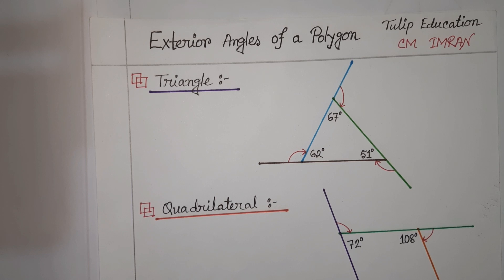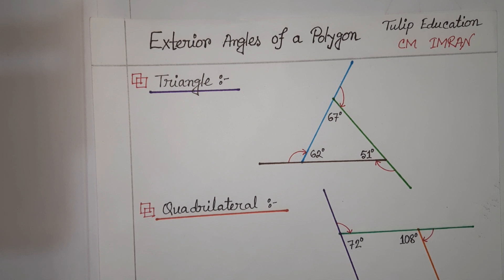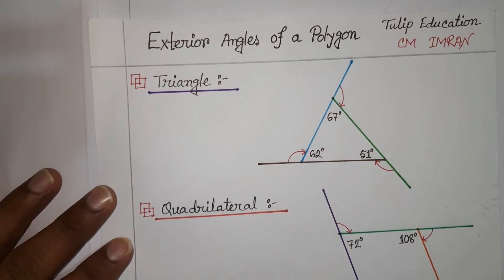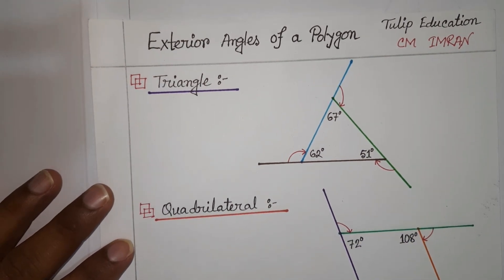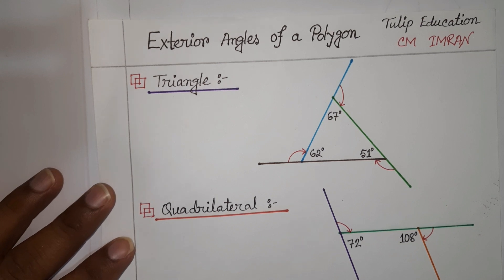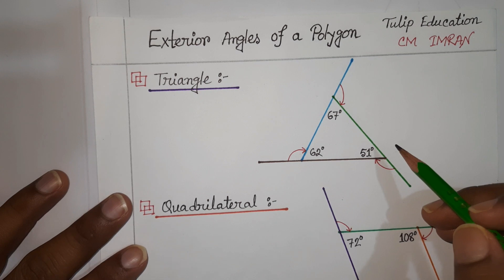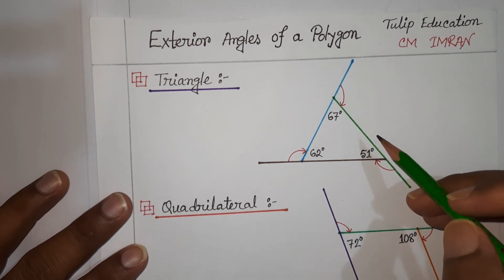Hello friends, welcome to today's tutorial. Today we are going to learn about the exterior angles of a polygon. In our previous tutorial we discussed the interior angles of a polygon — you can see the link in the description box. So what is the exterior angle? The exterior angle is the angle between any side of a shape and a line extended from the next side.